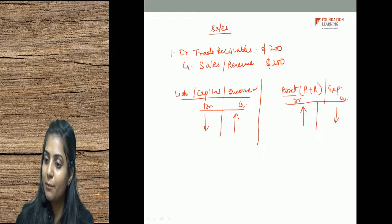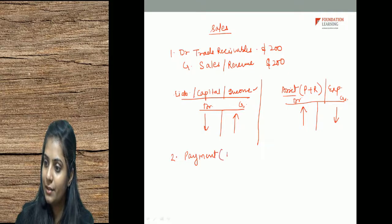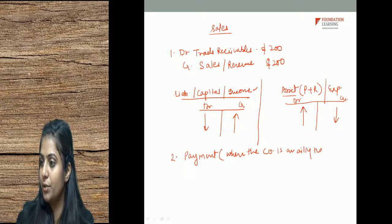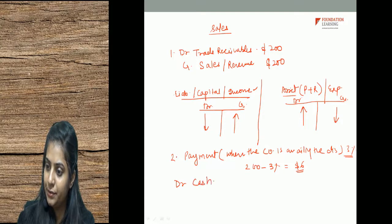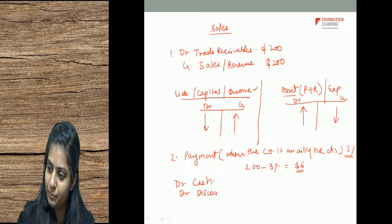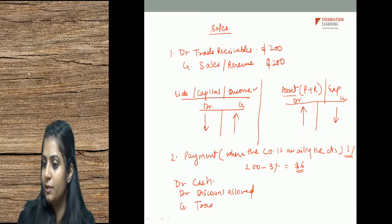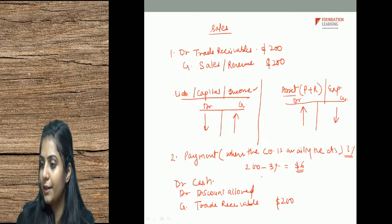At the time of payment, when the customer is availing the discount: 3% of $200 is $6. Entry: debit cash $194, debit discount allowed $6, and credit trade receivables $200. Trade receivables were debit before; now since they are being received, they become credit. Cash is an asset increasing, so debit. Discount allowed is an expense — the business is only receiving $194, not the full $6, so it is an expense because the customer was discounted.